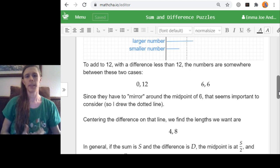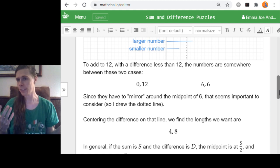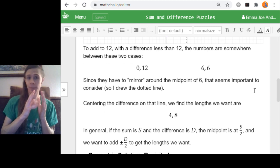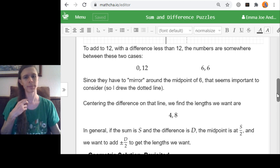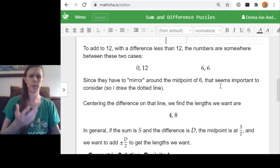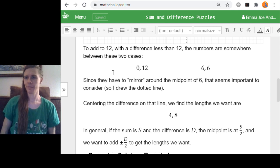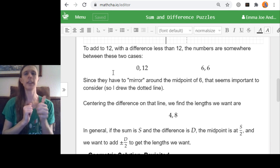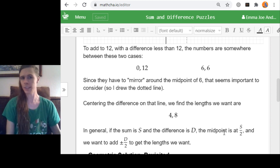So just so that the things I said were written down, I had typed to add to 12 with a difference less than 12, the numbers are somewhere between these two cases of between being 0 and 12 and 6 and 6. Since they have to mirror around the midpoint of 6, this seems important to consider. So I drew the dotted line. Centering the difference on that line, we find the lengths we want are 4 and 8. In general, if the sum is S and the difference is D, time to generalize that. That midpoint, we'll need to know where it is, and it's half of S. So the midpoint is at S over 2. And we want to add plus or minus half of the difference to each of them to get the lengths we want, plus or minus D over 2. All right, and that will work. If you wanted them to add to 20 but have a difference of 6, then half of 20 is 10, half of 6 is 3. If you go to 10 plus or minus 3 is 7 and 13. 7 and 13 still add to 20, great. 7 and 13, their difference is 6, great. So yeah, this is the process in general.